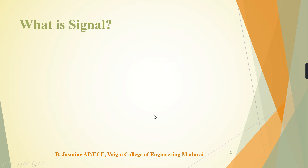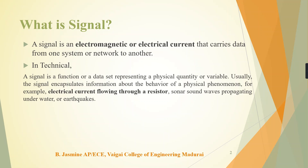First, what is a signal? A signal carries data — this is the first point to remember. A signal carries data from one system to another or one network to another. The signal may be electromagnetic or an electrical current. Technically, a signal is a function of data which represents a physical quantity. That quantity may be time, amplitude, or frequency. For example, electrical current flowing through a resistance — that electric current is a signal.